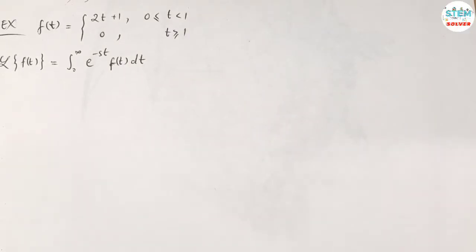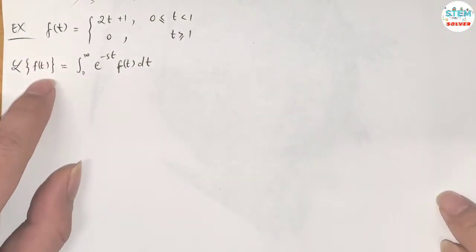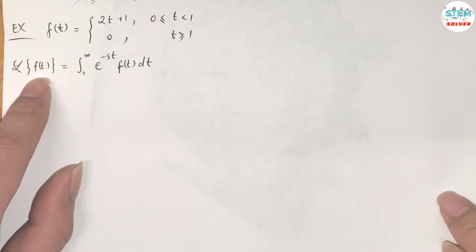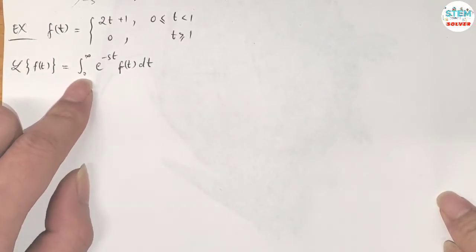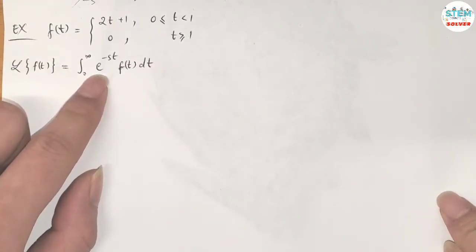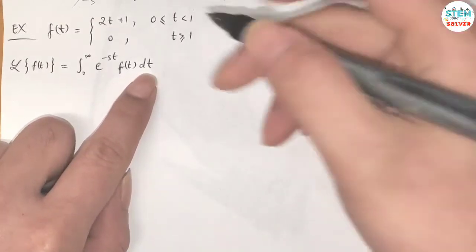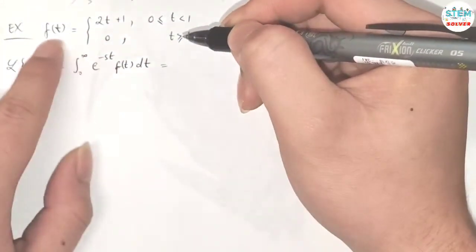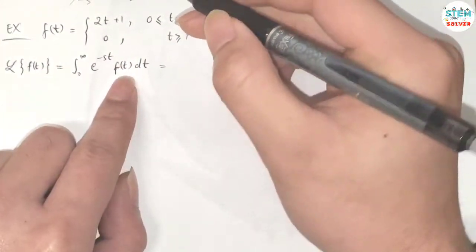Find the Laplace transform of this piecewise function. By the definition, we have the Laplace transform of f(t) is equal to the integral from 0 to infinity of e to the negative st times f(t) dt. So whatever f(t) is, just plug it into this.